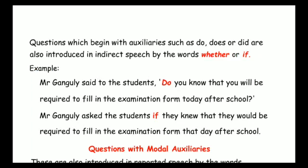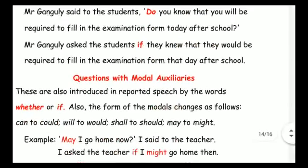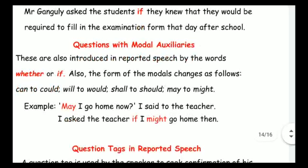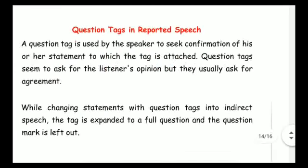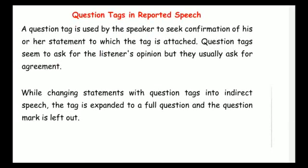Now we will move to auxiliary verbs. As I told you, auxiliary verbs — whether modal or normal — like is, am, was, were, may, might, can, could — all come after the subject and change their form to past tense, because the reporting verb 'said' is in past tense. So the verb inside the inverted commas also changes its form. Keep all these things in mind while changing from direct to indirect speech.